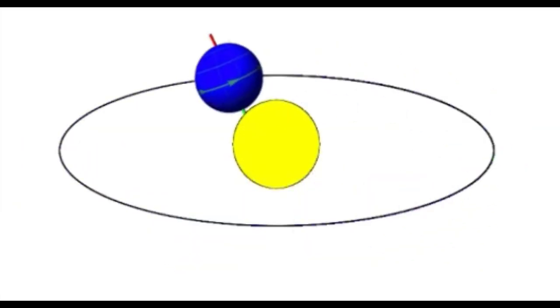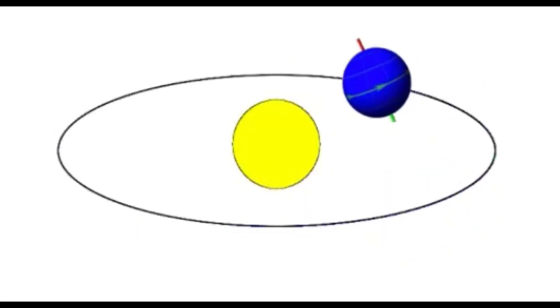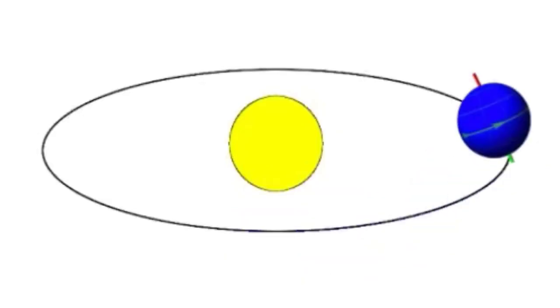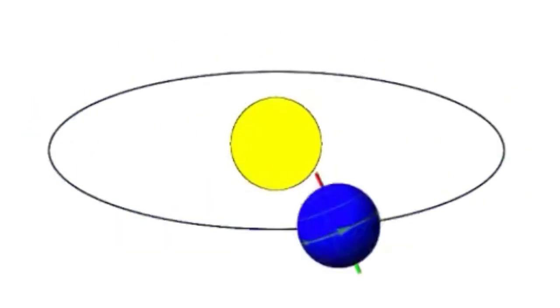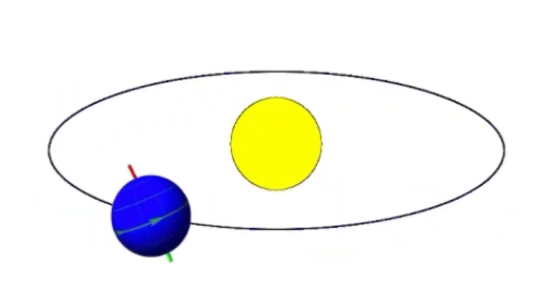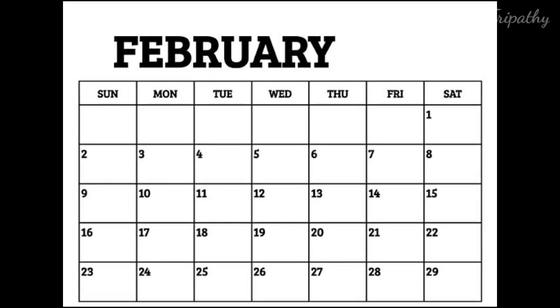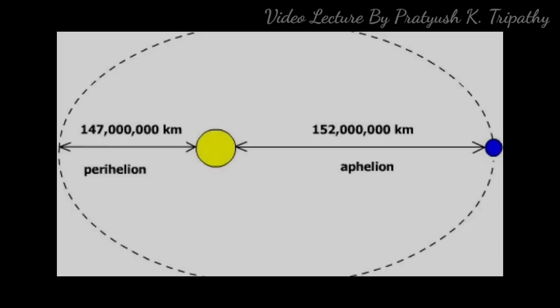Every 4 years, the extra one-fourth day difference between the tropical year and the calendar year of 365 days is taken as one whole day and this is added to the month of February in every 4 years. Hence, every 4 years, it is a leap year.